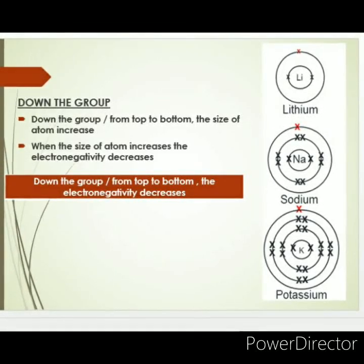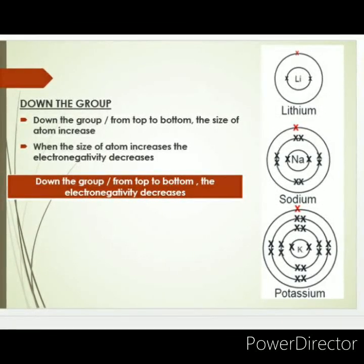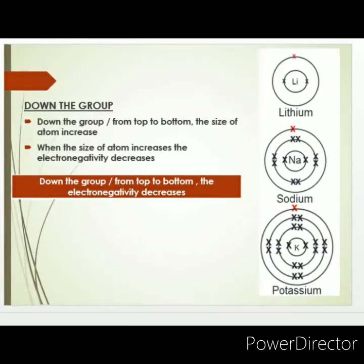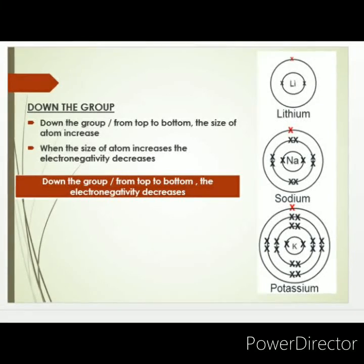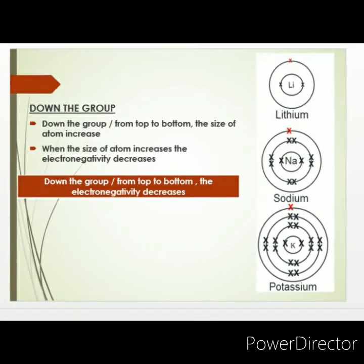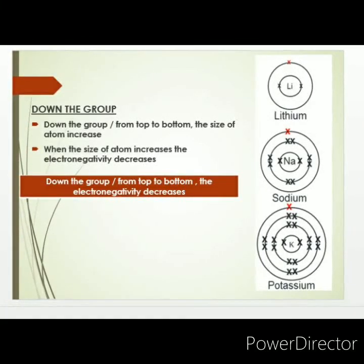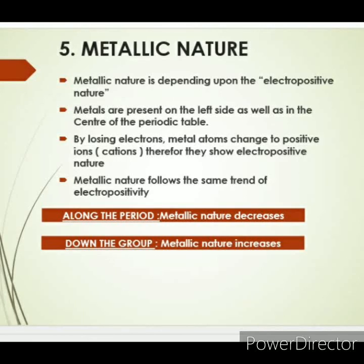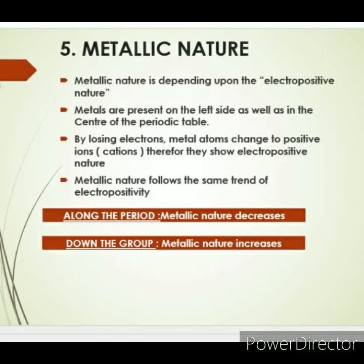What happens to electronegativity if you move from top to bottom, down the group? Look at the picture — lithium, sodium, potassium. Down the group, the size of the atom increases because shells are getting added. When the size of the atom increases, electronegativity decreases. So down the group, from top to bottom, electronegativity decreases.